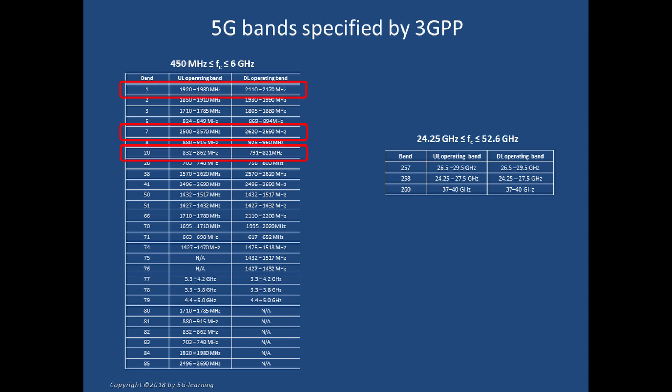Some of the centimeter bands are in use for mobile communications since a long time ago. For example, band one is being used in Europe for 3G; band seven and twenty are used in 4G. These bands will probably be refarmed for 5G sometime in the future.